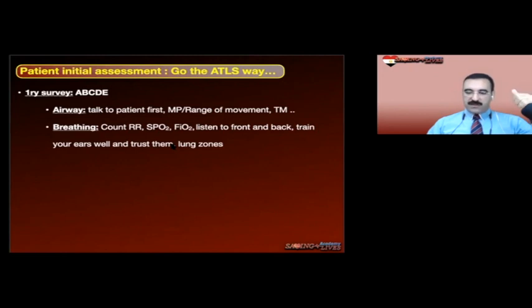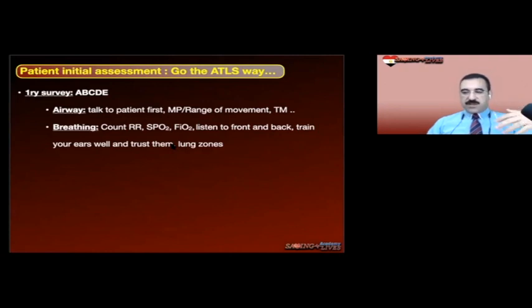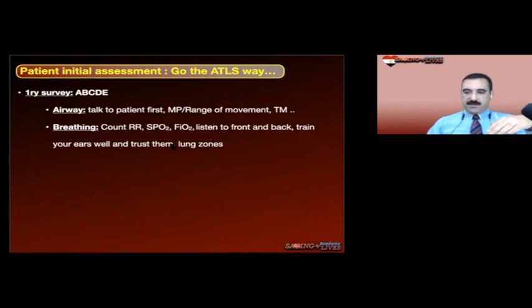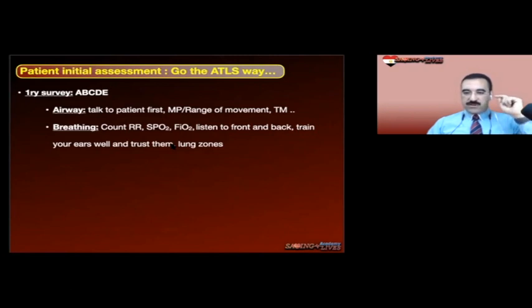Breathing: the first thing is respiratory movement. Look at chest rise, any intercostal retractions, count respiratory rate, put the pulse oximeter — is he saturating on room air or a non-rebreather mask? What is the FiO2? When you listen to the chest, I always emphasize: listen front and back. The front could be totally normal while the patient has bilateral lower lobe pneumonia only obvious in the back. Divide the lung into upper, middle, and lower zones, right and left, front and back. Train your ears.